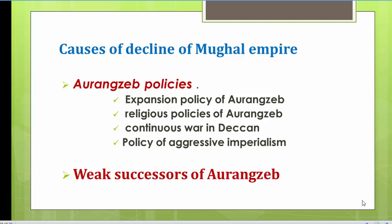Another policy was Aurangzeb's religious policy. He was a very orthodox ruler who tried to restore the Islamic character of the state and abandoned the policy of pluralism — where all religious groups were allowed to thrive together — believing his predecessors like Akbar had disturbed this Islamic character. He also tried to destroy a few temples and restored the tax of Jaziya. These controversial religious policies led to great unrest in the state. Additionally, the continuous wars in the Deccan drained the royal treasury, representing a great financial burden.